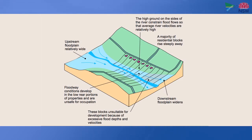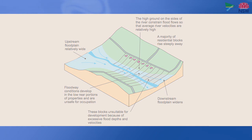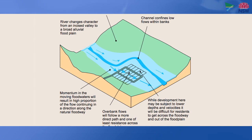The topography of the floodplain and flood behaviour through the site needs to be considered. This example shows a watercourse that would normally be confined during low flows, but will follow a more direct path and at higher velocities during rainfall events. This example also highlights the difficulty in evacuating residents in a severe storm event, as a subdivision would very quickly become isolated.